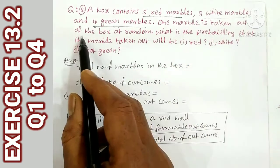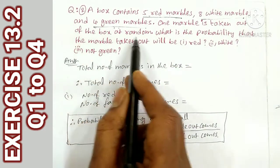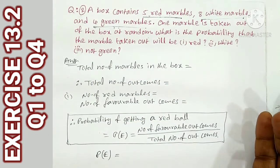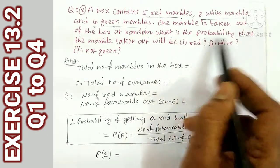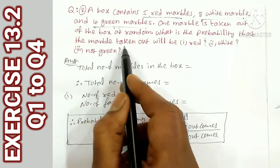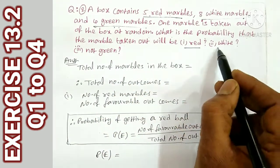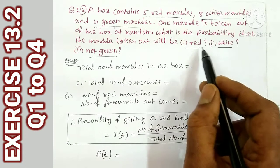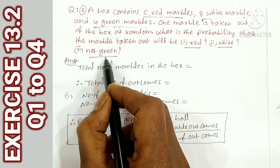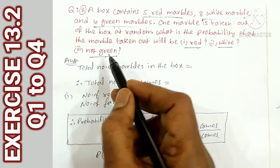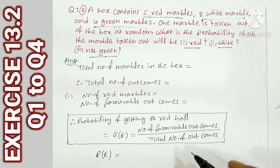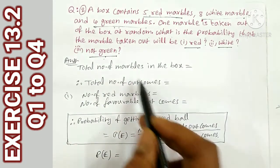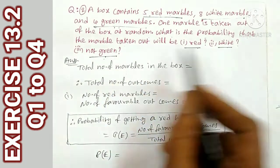One marble is taken out of the box at random. What is the probability that the marble taken out will be red, white, or not green? For not green, since green marbles are 4, not green would be 17 minus 4 = 13 directly.